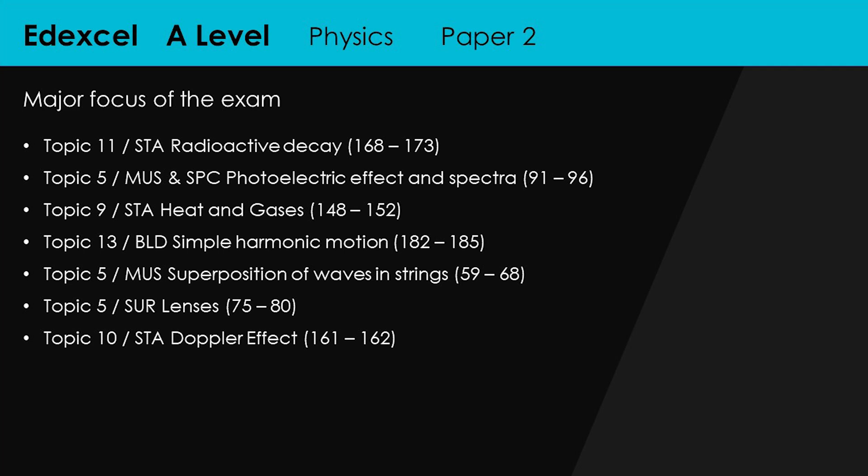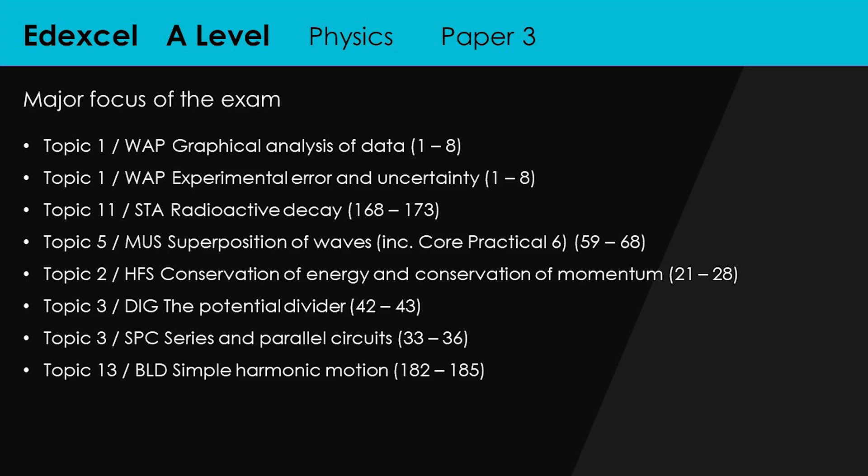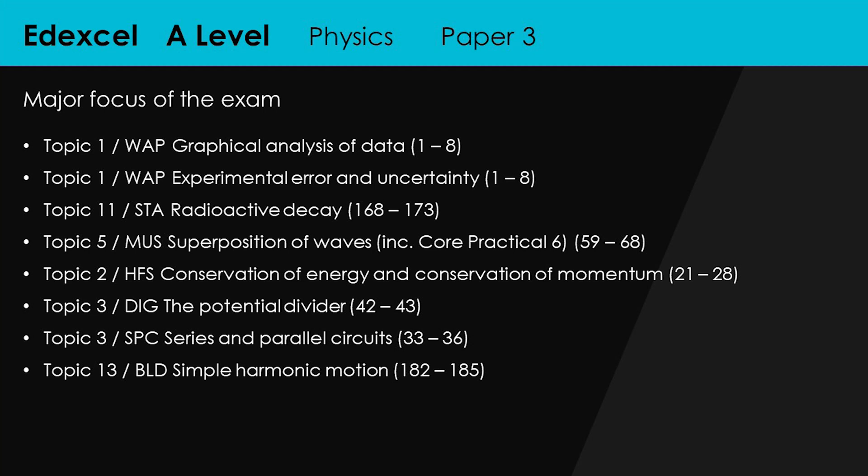For Edexcel paper 2, radioactive decay is right at the top, followed by the photoelectric effect and spectra. Then going into paper 3, there's a lot of graphical analysis of data — drawing a graph, plotting a couple of points, putting in a line of best fit, maybe even the worst acceptable line of best fit, looking at uncertainties, and so on. All of this is stuff you need to know about.